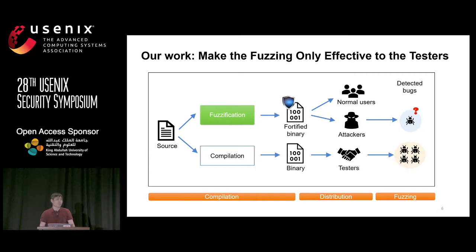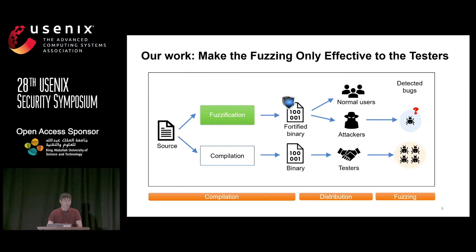By applying fuzzification, we release the fortified binary to the user. It means attackers have to use the fortified binary for fuzzing. As a result, attackers may end up with fewer bugs discovered, while testers discover more bugs using the normally compiled binary. That's our motivation.